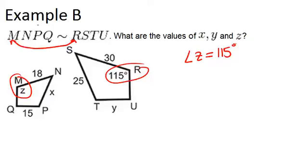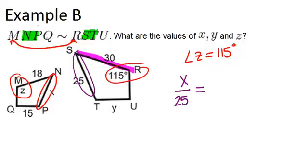Next, we want to figure out X. And X is side NP. And NP is corresponding to ST. So that means X matches with ST, which is 25. So X over 25 equals... And now we have to figure out a ratio we know both sides of. So let's see what else matches. We know that SR, which is 30, must match with something on the shape on the left. So SR is going to match with MN. So MN is 18. So the ratio that we know is actually 18 over 30. Notice that I matched the X with the 18, because they were both from the same shape.